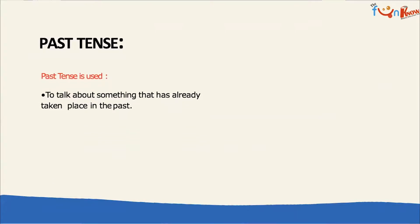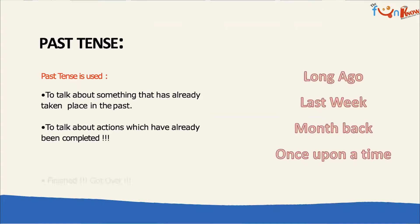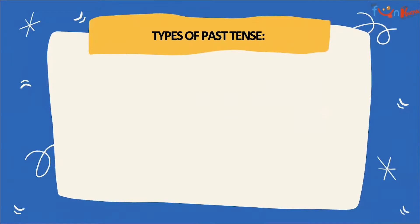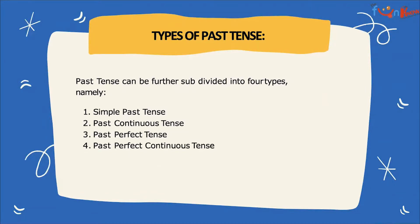Past tense is used to talk about something that has already taken place in the past. It is used to talk about actions which have already been completed, which are finished or over. Now we already know the four different types of past tense, which are simple past tense, past continuous tense, past perfect tense, and past perfect continuous tense.